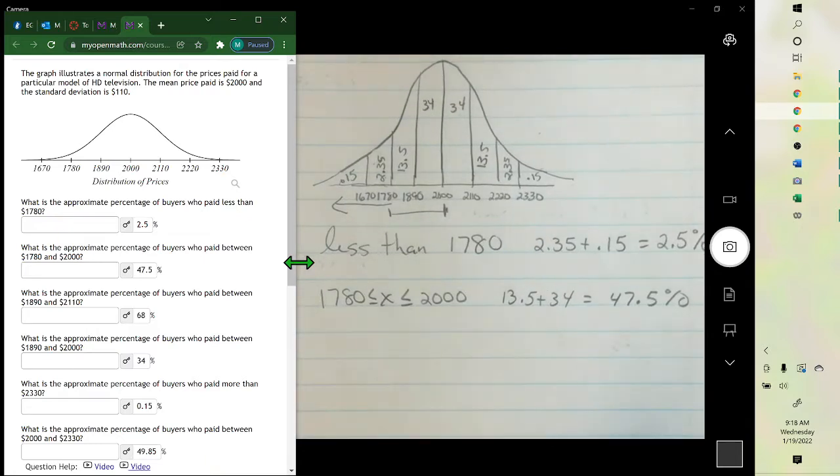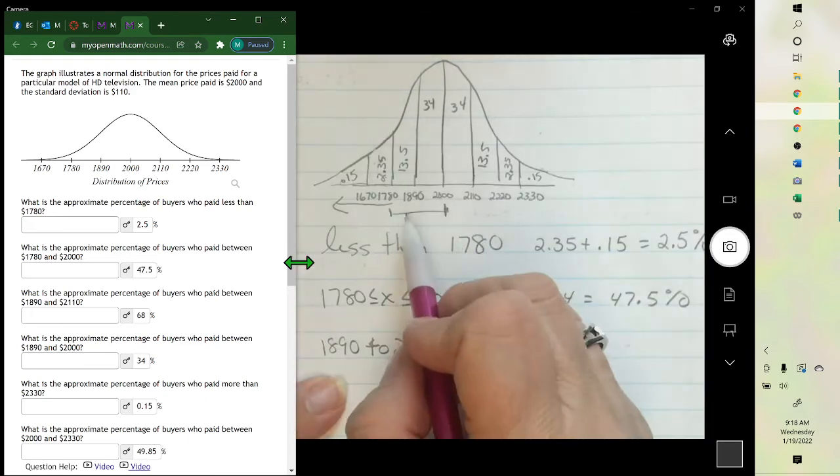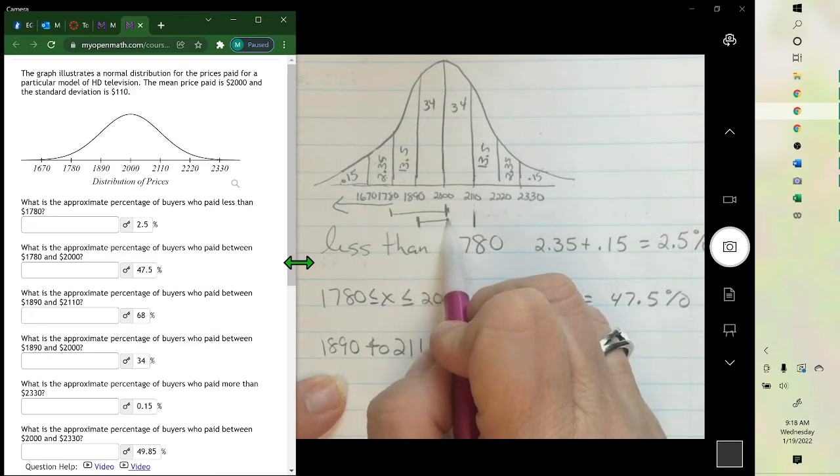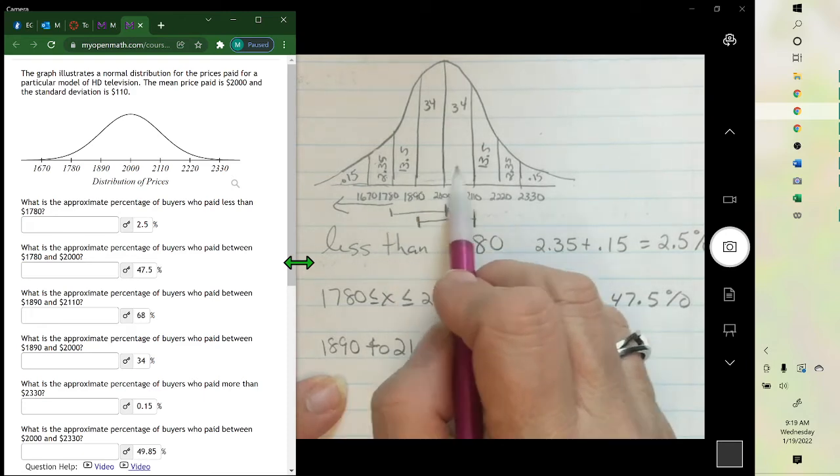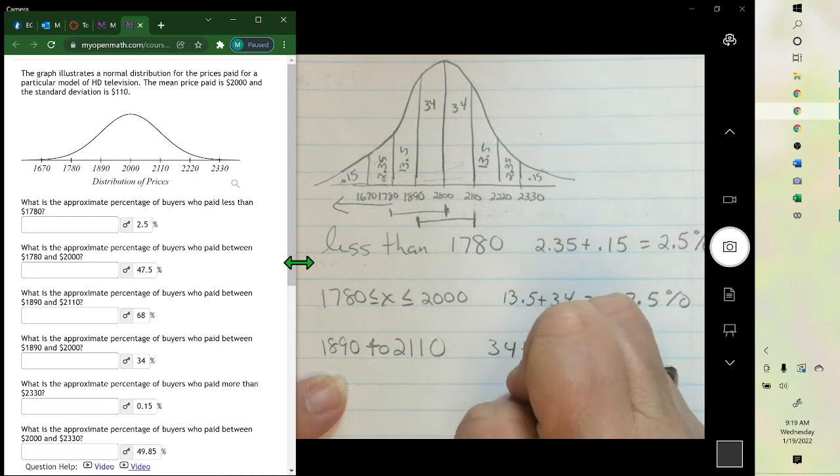So $1890 to $2110. $1890 is here. $2110 is here. So it's just these two. 34% plus 34% is 68%.